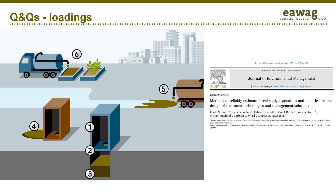Estimates of quantities and qualities can be made at six places in the service chain. 1. Excreta, or urine and feces. 2. Total fecal sludge produced, which is excreta together with anything else going into the containment, such as flush water, cleansing material, and rubbish.